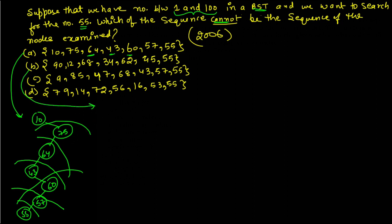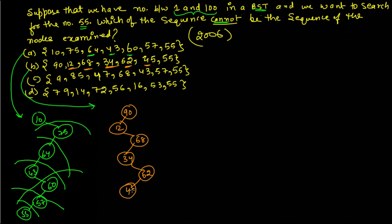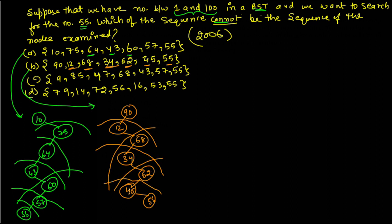In the second sequence: 90 as root, 12 is less than 90 and goes left, 68 is greater than 12, 34 is less than 68, 62 is greater than 34, then 45, and then 55 is less than 45. All constraints are satisfied — data left of 90 is less than 90, data right of 12 is greater than 12, and so on. This is also a valid sequence.